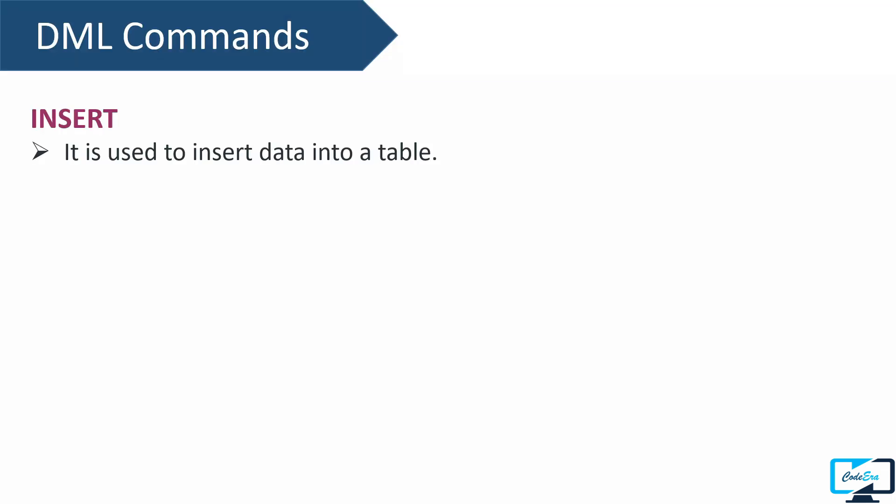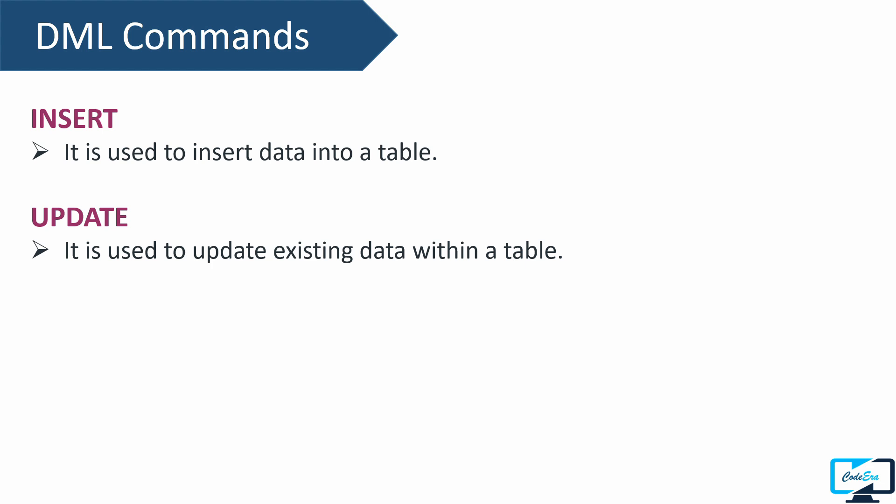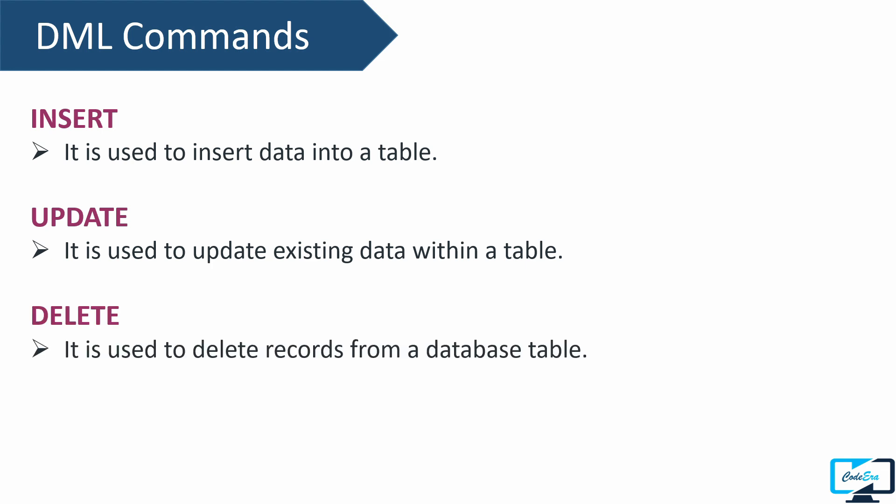The first DML command is INSERT, simply used to store new records or data into a table. The second command is UPDATE, used to change or modify existing data in a table. For example, if you stored a user's data using INSERT but now want to update details like their name or age, you use the UPDATE command. The next DML command is DELETE, used to delete one or more existing records from a table. The last DML command is CALL, used to call a stored procedure defined previously. Don't worry if you don't understand CALL — we will discuss it later as part of advanced SQL.